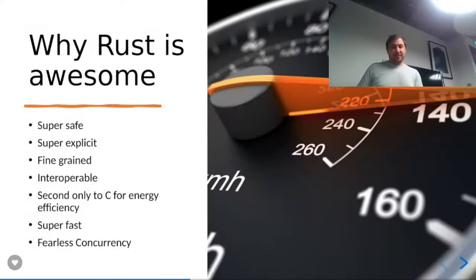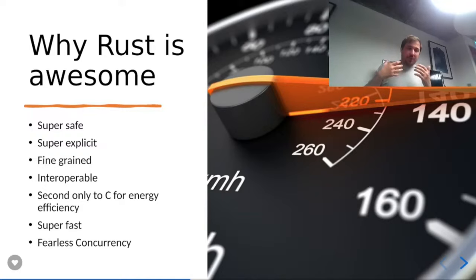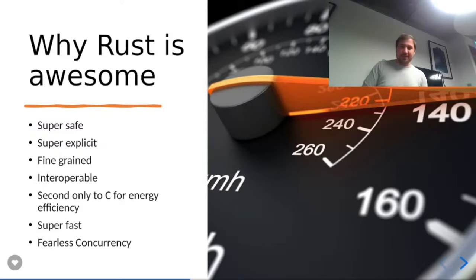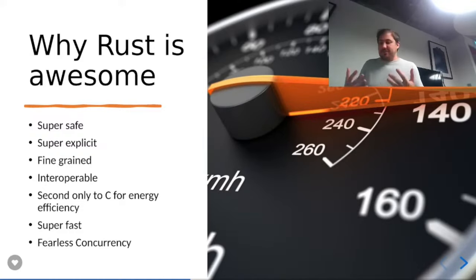So why is Rust awesome? It's super safe — we've shown that with the dictionary example, being explicit about copying or referencing. It's fine-grained, letting you work at both high and low levels. It's interoperable. Studies from AWS show it's second only to C for energy efficiency — who doesn't like low server counts? It's fast and has fearless concurrency. Now let's talk about things we've actually done in Rust, then cover how to speed up Python with Rust.